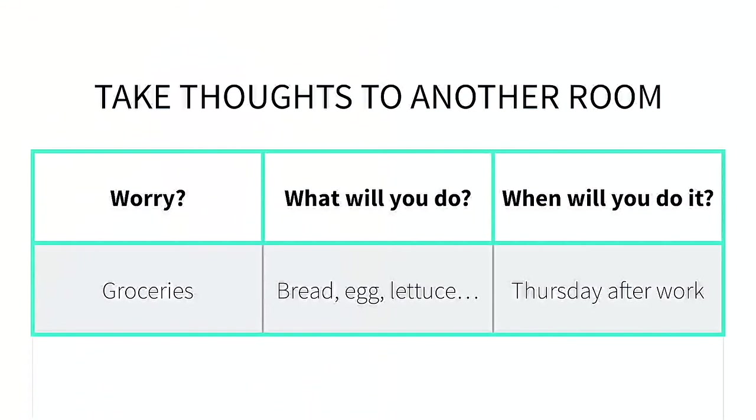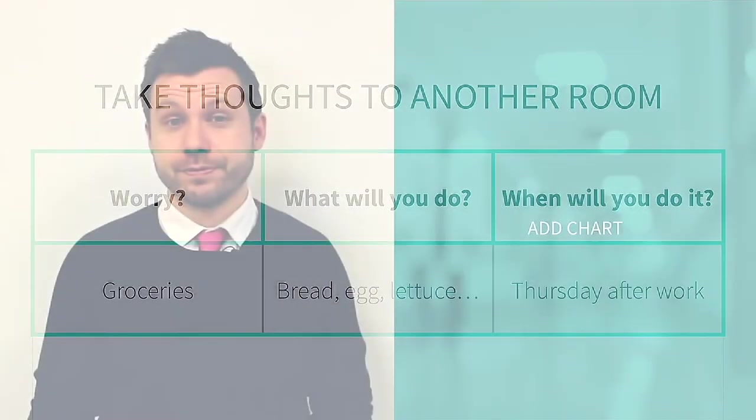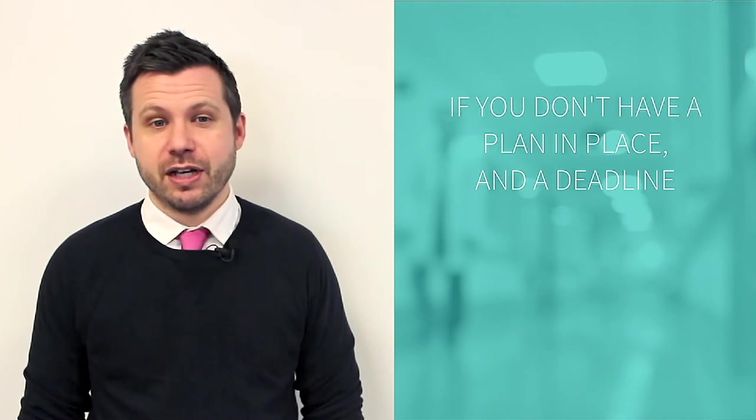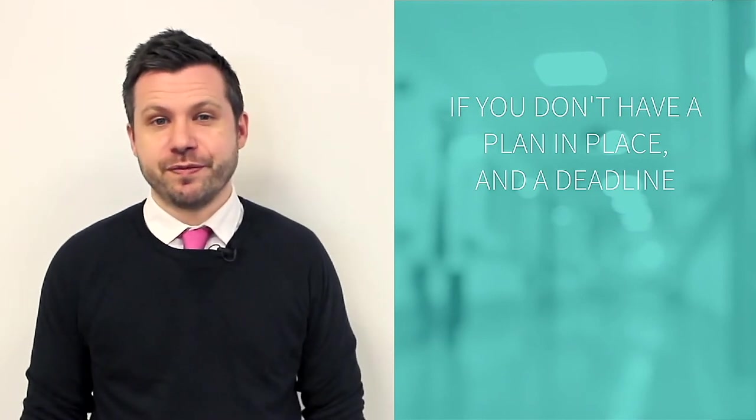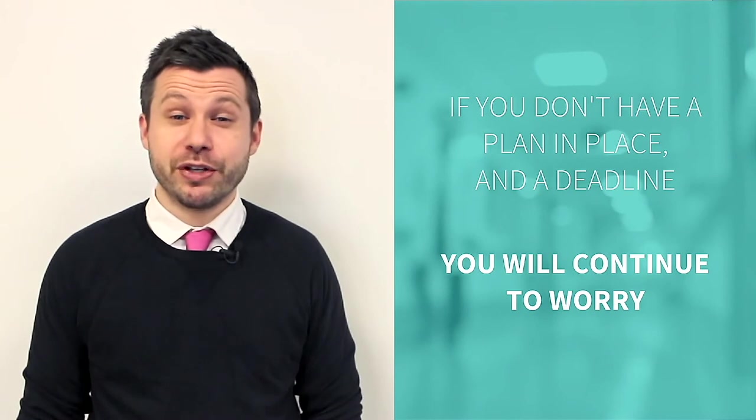Here is an example of how you fill this out. Let's say you are worried about groceries. First, you would write that down. Then, you would go to the next column and write down what you are going to do about it. In this case, you would write down which groceries you need. Then, in the final column, you would write down when you are going to get them. Here, in this example, the person writes down Thursday after work. This is the most important column because it allows us to put these thoughts out of our minds. If we don't have a plan in place for something and a deadline for when we will do it, we will continue to worry. That's what worrying is for.